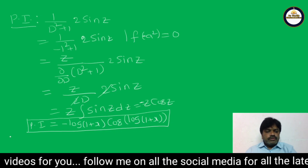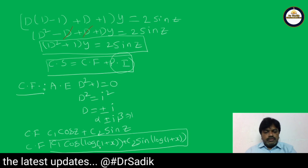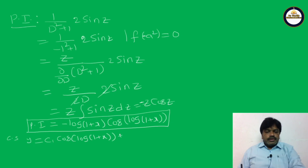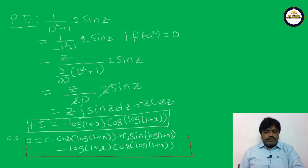The complete solution is: y = c₁ cos(log(1+x)) + c₂ sin(log(1+x)) − log(1+x) · cos(log(1+x)), which is the required solution of the given problem.